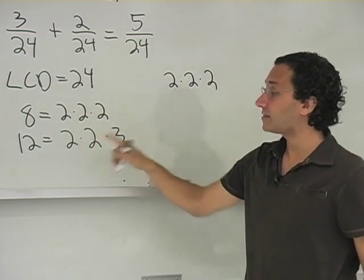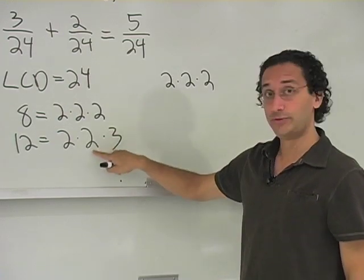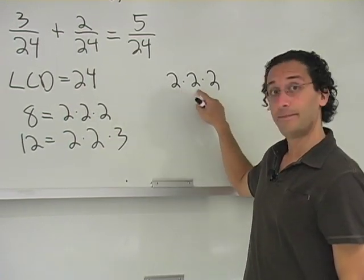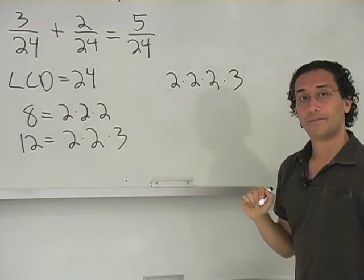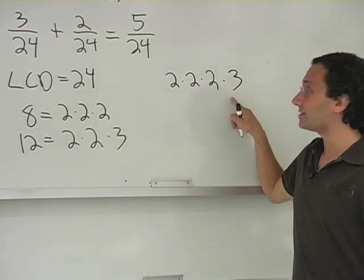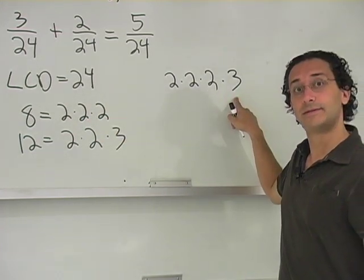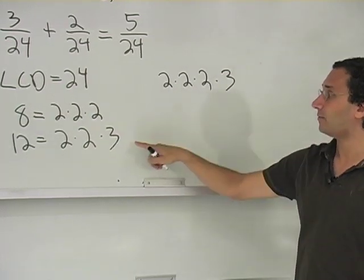For 12 to divide into it, it needs two twos - got them - and it also needs a factor of three. Right, 2 times 2 times 2 divides into this guy. 2 times 2 times 3 divides into it 2 times. What is this number? 24.